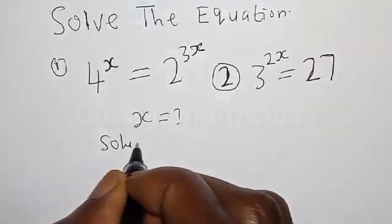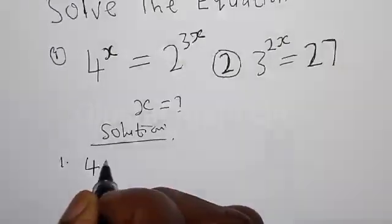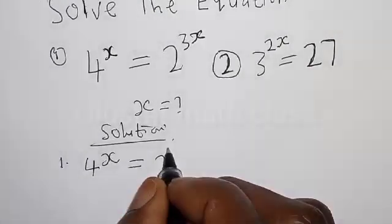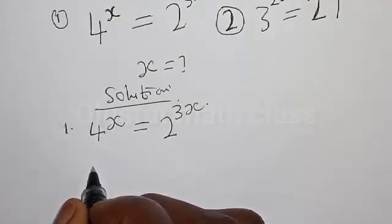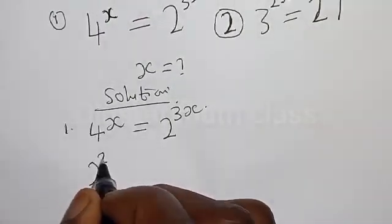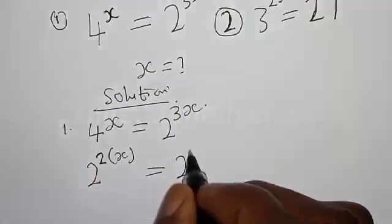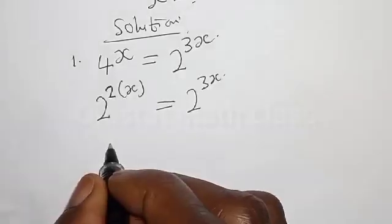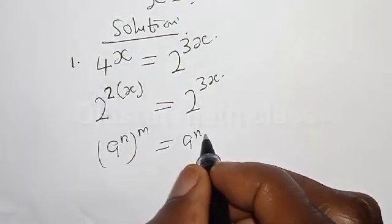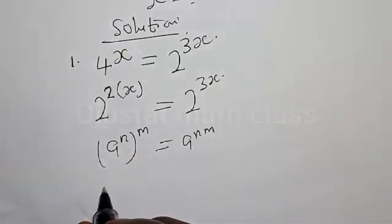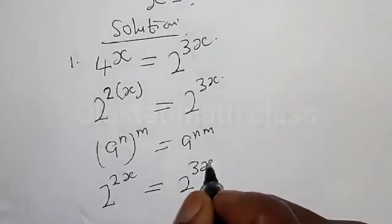Solution. We have the first equation: 4 raised to power s is equal to 2 raised to power 3s. Then 4 raised to power s can be expressed as 2 raised to power 2, into s, equal to 2 raised to power 3s. Remember, if you have a raised to power n raised to power m, it is the same as a raised to power n times m. Therefore our equation becomes 2 raised to power 2s is equal to 2 raised to power 3s.